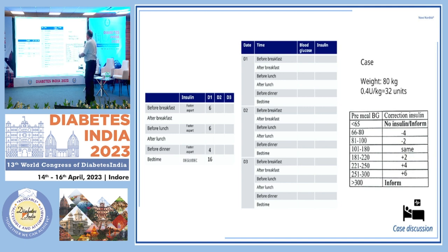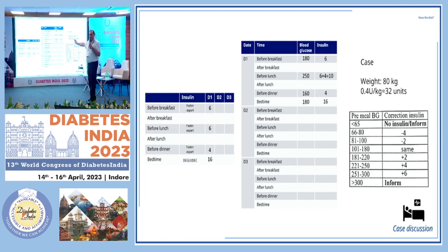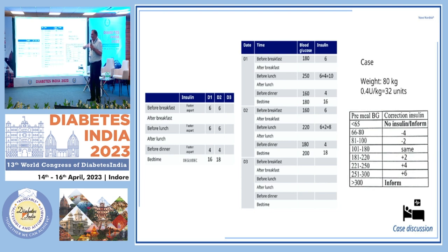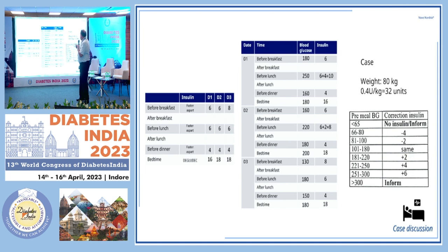Day one: started on 6-6-4 and 16 units long-acting. Day two: before lunch glucose was 250 — not on target — so you add a correction dose of plus 4, making it 10 units. Before dinner it was 160 — fine. Bedtime was 180 — perfect; 16 units given. Next day the fixed plan is 6-6-4 and 18 units. Don't confuse the correction dose with a sliding scale — you're already on a fixed dose and adding a corrective dose on top. By day eight, 8-6-4 regimen, most readings are under target.